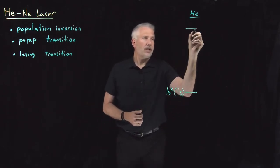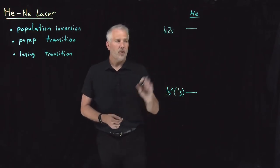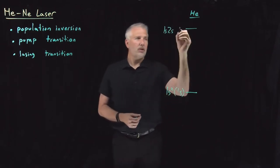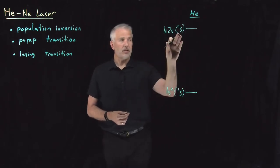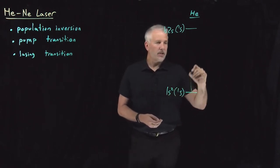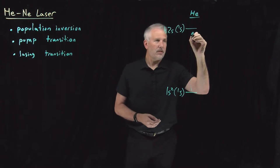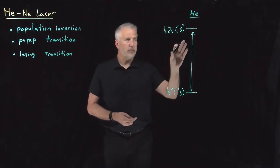There's a high-lying energy state that you could either write as electron configuration 1s2s, or you could write that also, its term symbol is also a singlet S, so the spins are paired, essentially. That transition turns out is the pumping transition that's made use of in the helium neon laser.